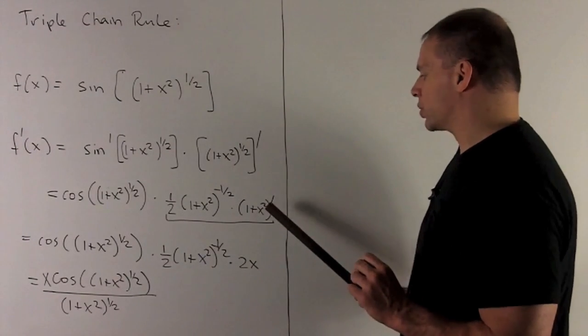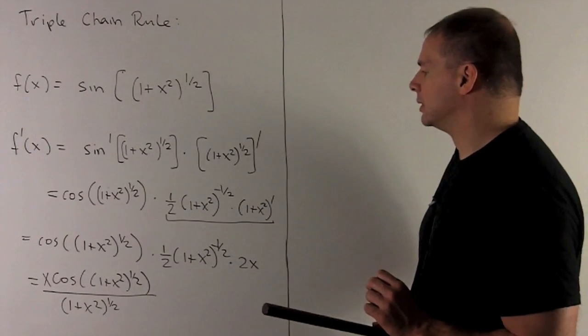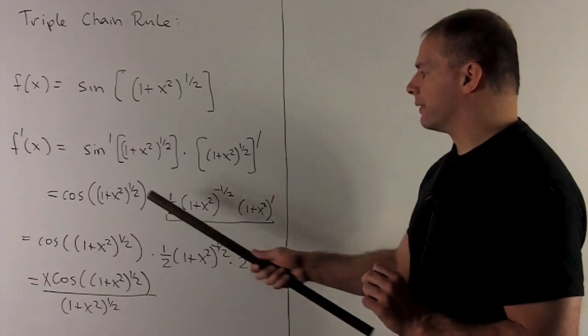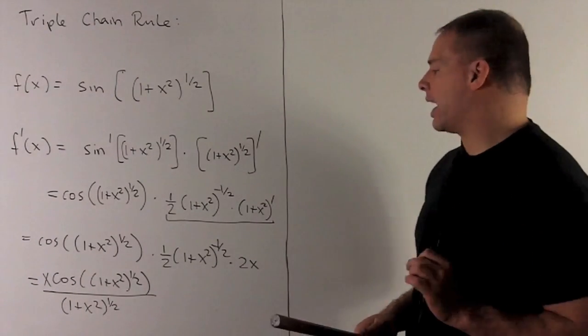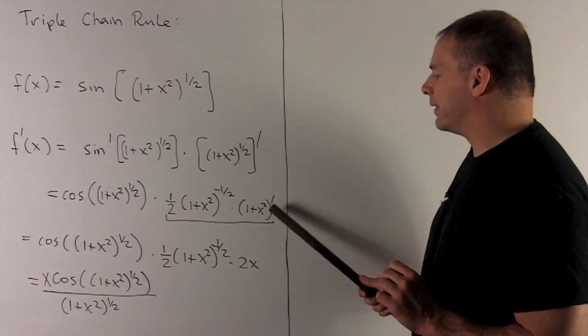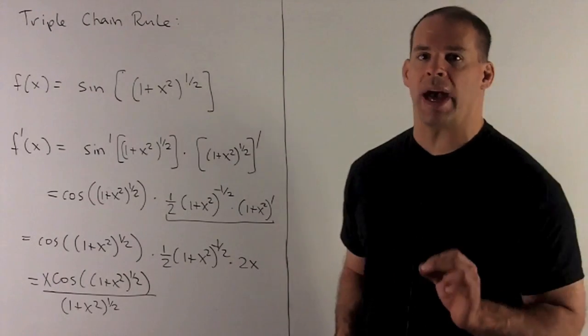So, it's going to be a 1 plus x squared prime. All right. So, the first two terms pretty much taken care of. 1 plus x squared prime. Derivative of that with respect to x is just going to be 2x.